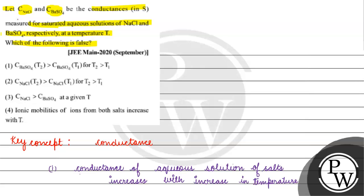With increase in temperature, we have increase in ionic mobility, then we have increase in conductance. Then we have T2 is greater than T1. Here we have the statement that conductance of barium sulfate for T2 is greater than conductance of barium sulfate at T1, this statement is correct. For NaCl, the second option is correct.